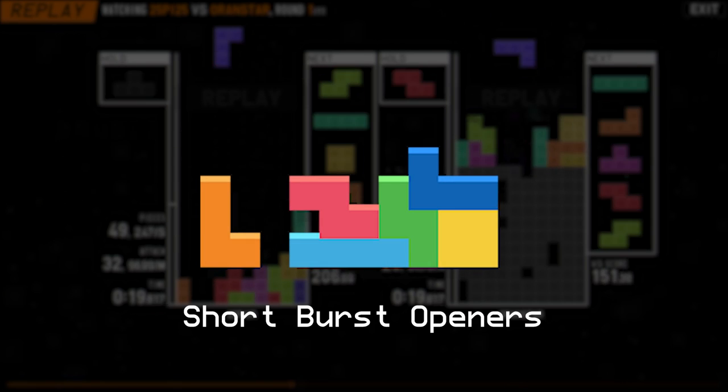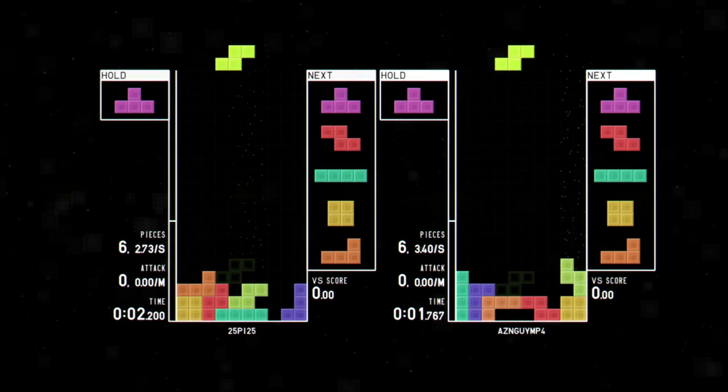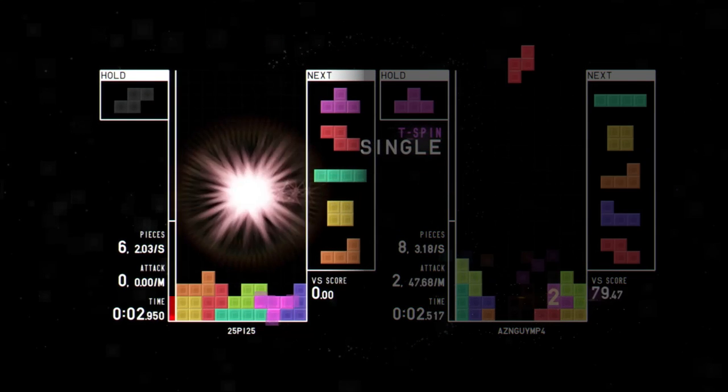Something like TKI for example. For each T-spin and TKI, we'll wait for the opponent to send first. Then we'll send right after, cancelling it out.